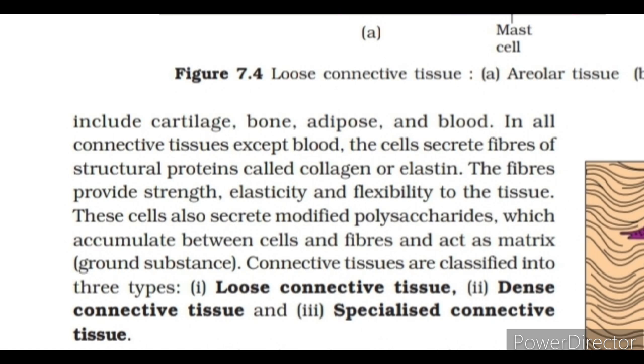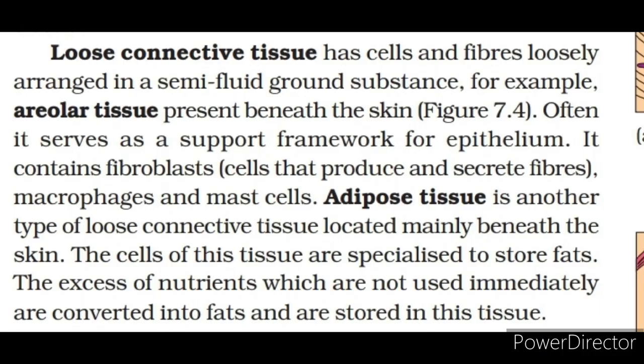Connective tissues are classified into three types: 1. loose connective tissue, 2. dense connective tissue, and 3. specialized connective tissue. Loose connective tissue has cells and fibers loosely arranged in a semi-fluid ground substance, for example, areolar tissue present beneath the skin. It often serves as a support framework for epithelium and contains fibroblasts (cells that produce and secrete fibers), macrophages and mast cells.